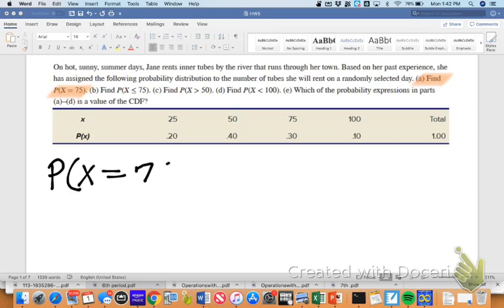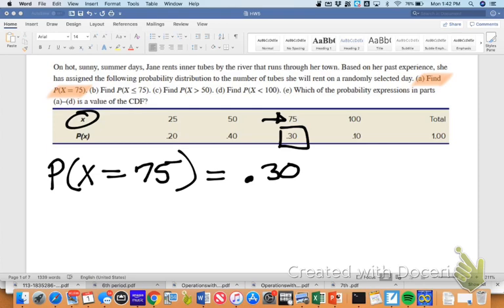So the probability that she's going to sell 75 inner tubes that day. We simply need to look where X is 75, which is right there, which means the probability will be 0.30.